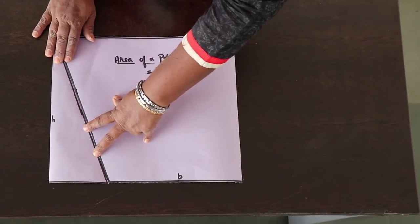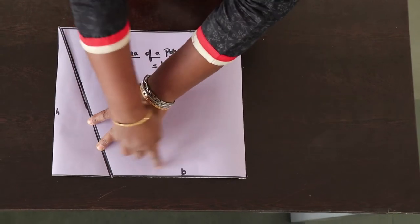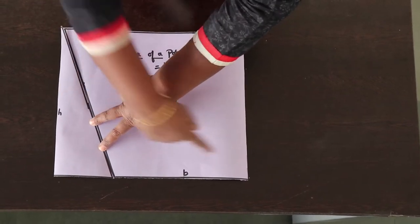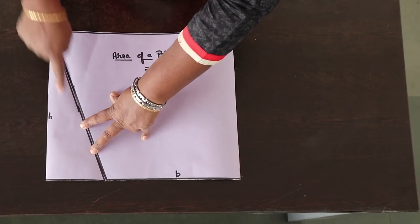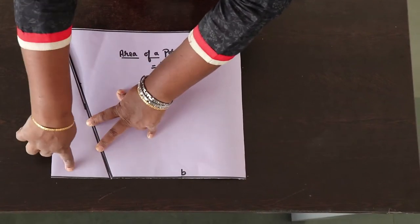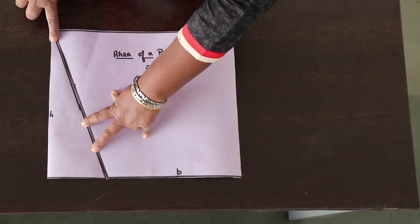Now what is the area of a rectangle? Yes, we all know the area of a rectangle is length into breadth. That is, the length is b and the breadth is h here.